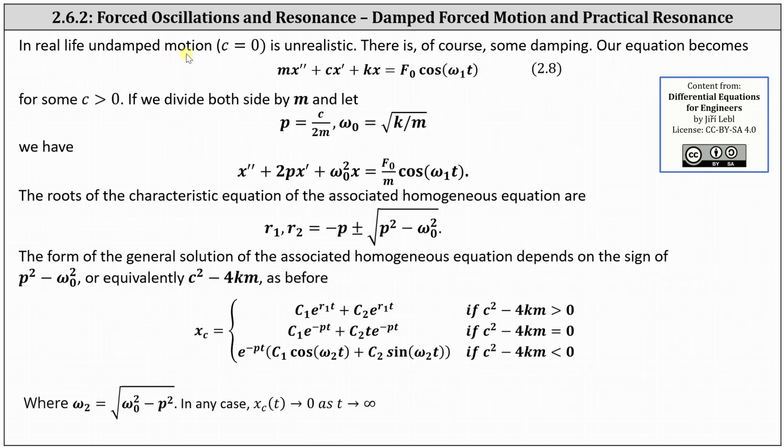In real life, undamped motion is unrealistic. This occurs when C, the friction or damping constant, is equal to zero. There is, of course, some damping.